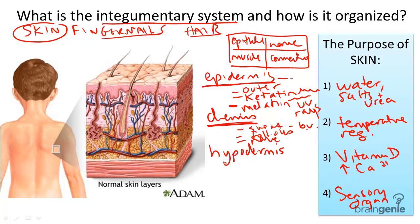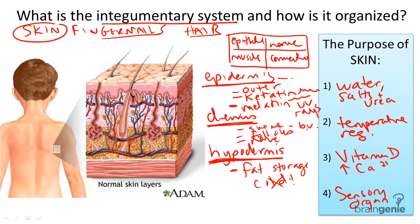And finally, the hypodermis — the innermost layer of the skin, also called the subcutaneous layer — consists of connective tissue that stores fat and insulates the body from the cold. So what's the purpose of fingernails and hair? Check out our other videos to find out.